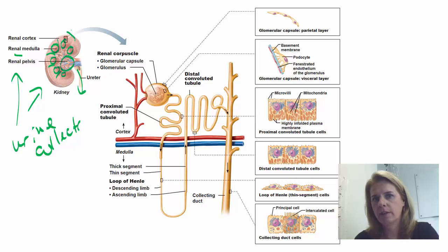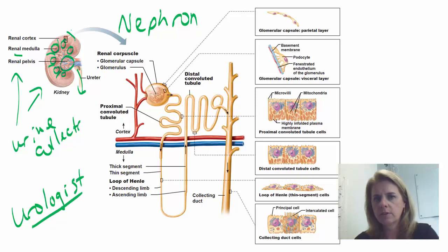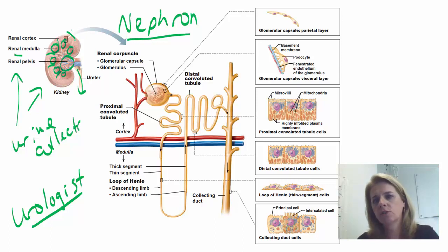The other key part of the kidney you have to know is called the nephron — that's where the term nephrologist comes from. A urologist is a surgeon who does prostate surgeries, urinary surgeries, bladder surgeries, and kidney stone interventions. A nephrologist is an internist — still an MD, but non-surgical — who deals with things like dialysis, diabetes-related kidney damage, nephritis, and blood pressure issues. So urologists are surgeons and nephrologists are internists.